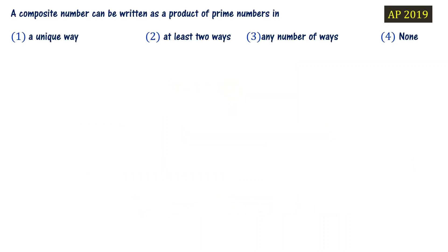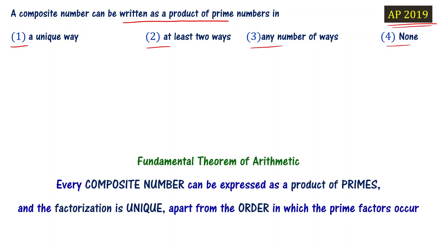A composite number can be written as a product of prime numbers. In what way? One choice is: a unique way, at least two ways, any number of ways, or none. This is AP policy of 2019. The question is about the fundamental theorem of arithmetic.